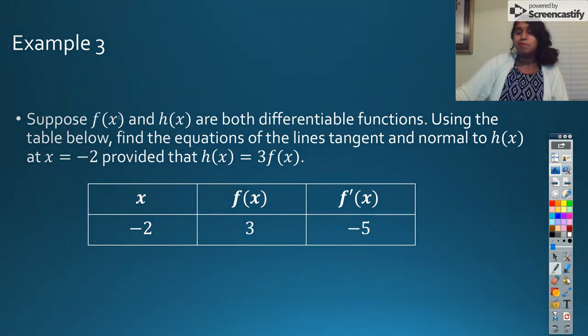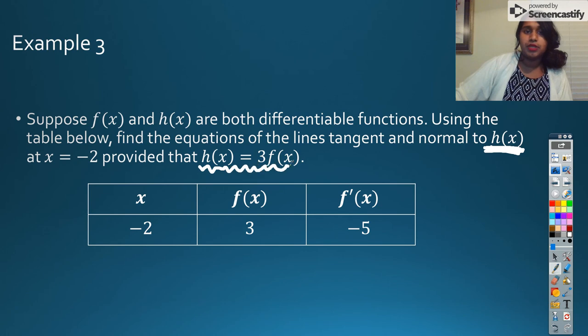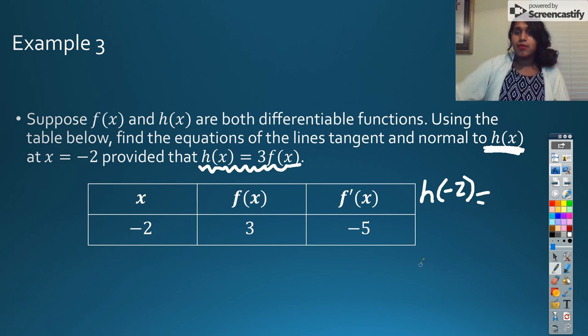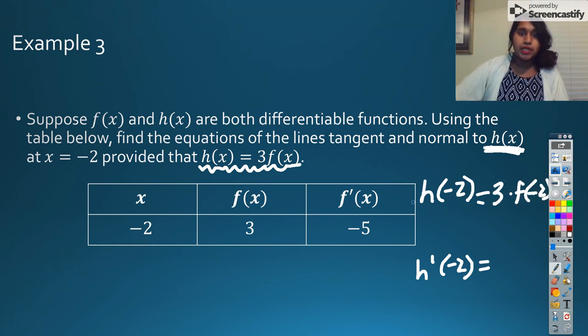Here we have example 3. Using the table below, find the equations of the lines tangent and normal. We're looking for the information about h of x, but we are given this formula. So just to start off, I'm going to figure out what h of negative 2 is going to be and what h prime of negative 2 is going to be. Well, h of negative 2 is simply going to be 3 times f of negative 2. And we know f of negative 2 was given to us right here. So that's going to be 3 times 3, which is just 9.